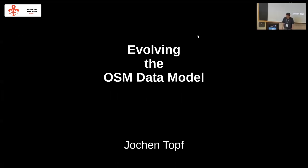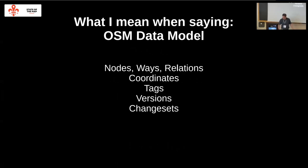Thank you, Martijn. I'm talking again about evolving the OSM data model. When I'm talking about the OSM data model, what I'm talking about is the nodes, the ways, the relations, how we store coordinates, that we have tags, that we have versions, changesets — that's what I mean with data model.